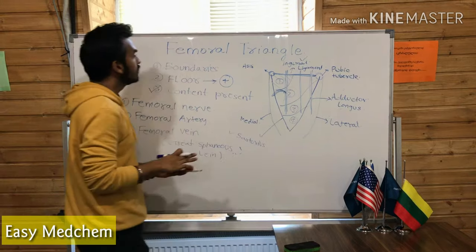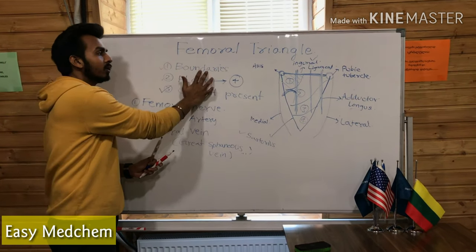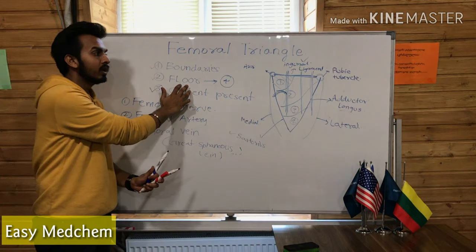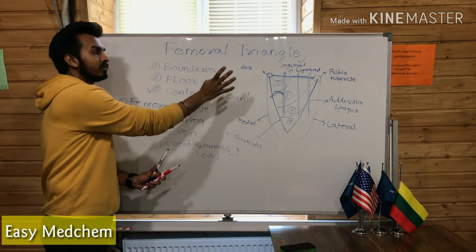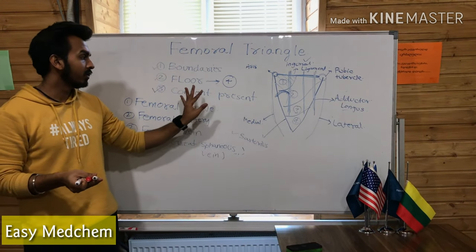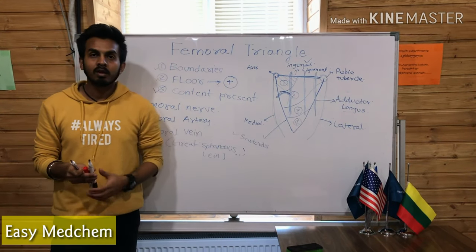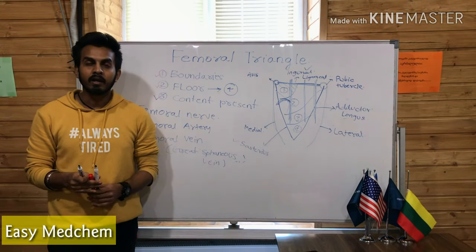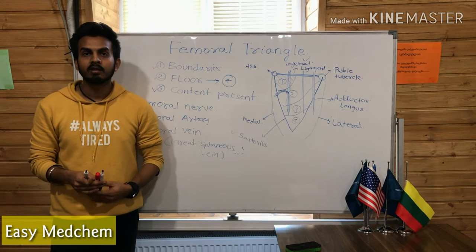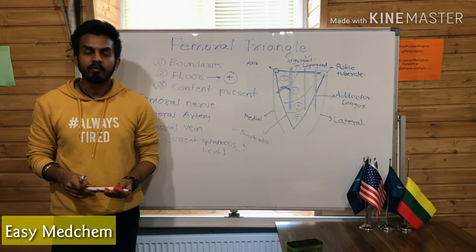So this is all about the femoral triangle. We covered about the boundaries, the floor — which has four muscles making the floor of the femoral triangle — and the contents which are present in the femoral triangle. I hope you liked the video. Please like, share, and subscribe to my channel, and press the bell icon for more notifications.